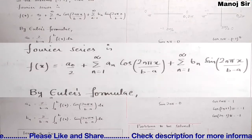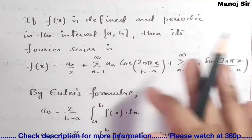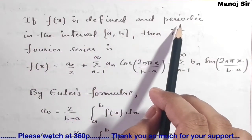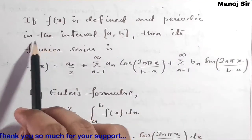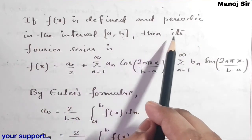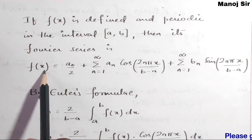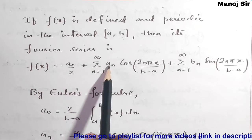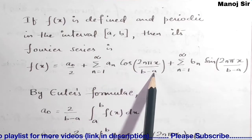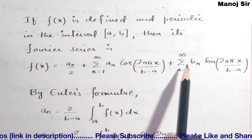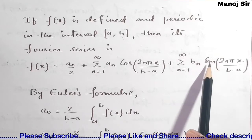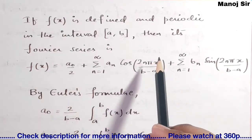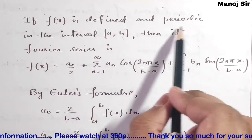Let us start one by one. First, the definition of Fourier series: if f(x) is defined and periodic in the interval a to b, then its Fourier series is given by f(x) = a₀/2 + Σ(n=1 to ∞) aₙ cos(2nπx / (b−a)) + Σ(n=1 to ∞) bₙ sin(2nπx / (b−a)).